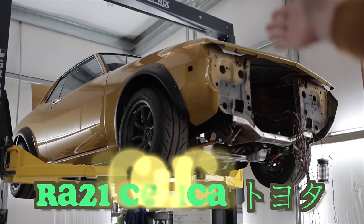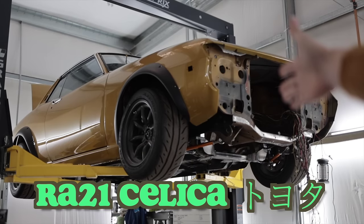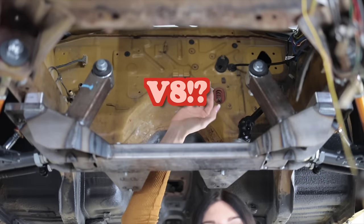Hello people of the world watching things that have to do with cars on the internet. Welcome to this. My 1974 RA21 Toyota Celica with a big hole where an engine should be.